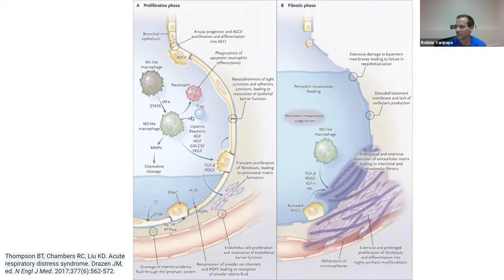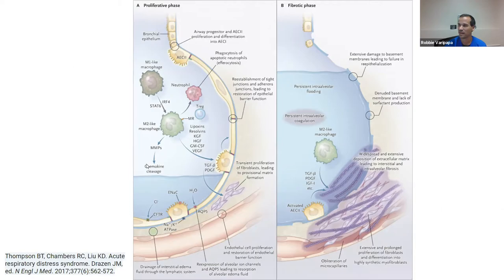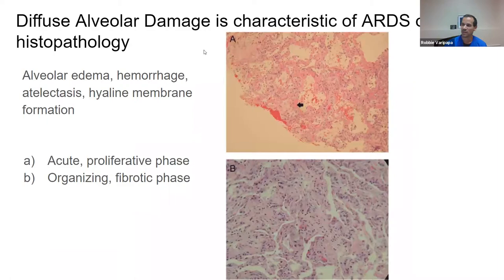The proliferative phase occurs several days to weeks after the exudative phase, with recruitment of fibroblasts that leads into the fibrotic phase, where extensive proliferation of myofibroblasts results in fibrosis and scarring. ARDS, although it occurs acutely, has a prolonged illness afterwards with all three phases. Sometimes there is intermixing where some areas of the lung may be more fibrotic while others are still in the proliferative or exudative phase.